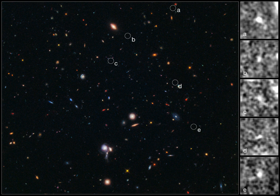Notable galaxy clusters in the distant, high-redshift universe include SPT-CL J0546-5345 and SPT-CL J2106-5844, the most massive galaxy clusters found in the early universe.